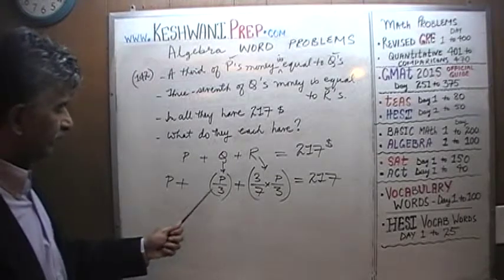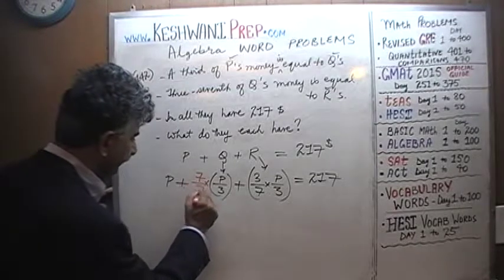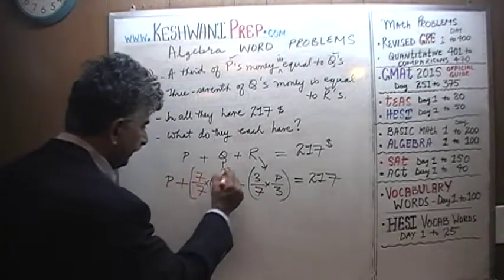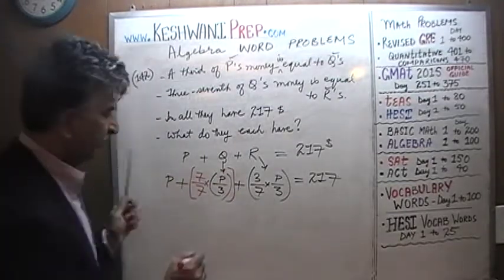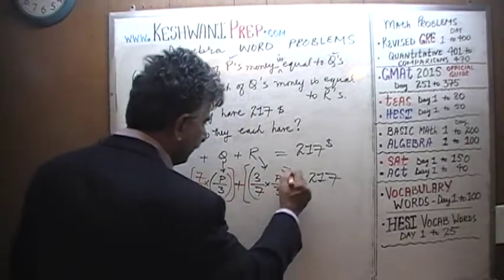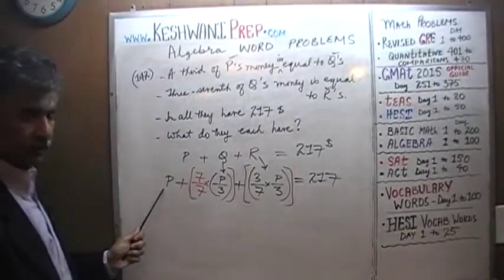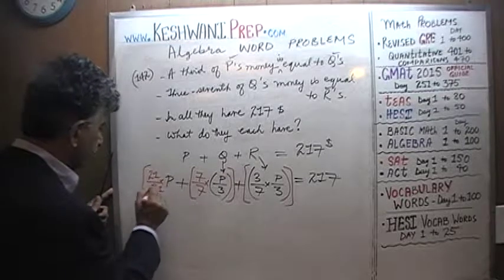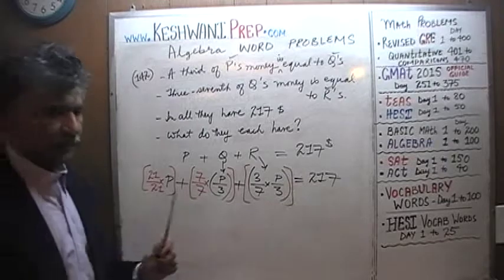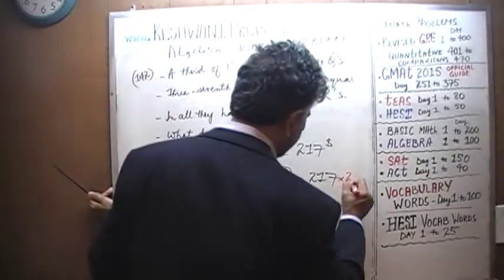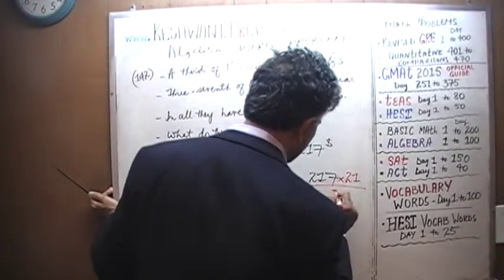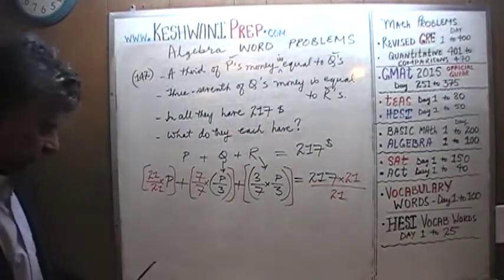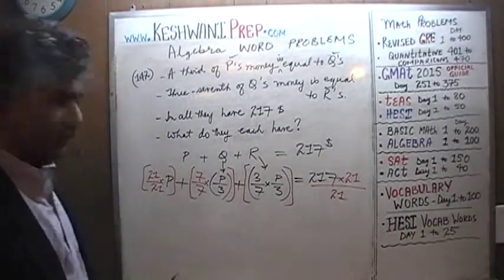Here we have a 3, let's multiply it by 7 over 7. We already have 7 times 3 in this quantity, and we need a 21 here. Let's multiply this by 21 over 21 and introduce 21 in the denominator there as well. Everything has a denominator of 21, we can simply ignore it.